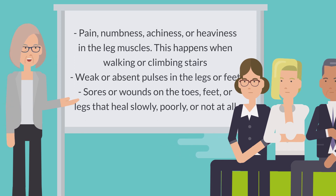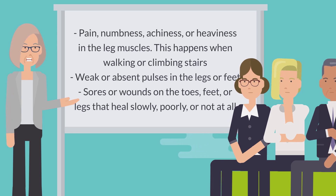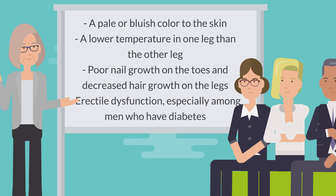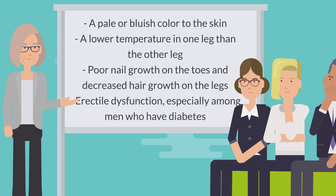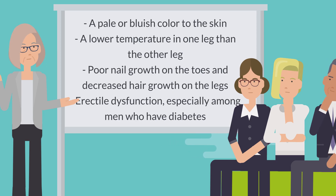Symptoms may also include weak or absent pulses in the legs or feet; sores or wounds on the toes, feet, or legs that heal slowly, poorly, or not at all; a pale or bluish color to the skin; a lower temperature in one leg than the other; poor nail growth on the toes and decreased hair growth on the legs; and erectile dysfunction, especially among men who have diabetes.